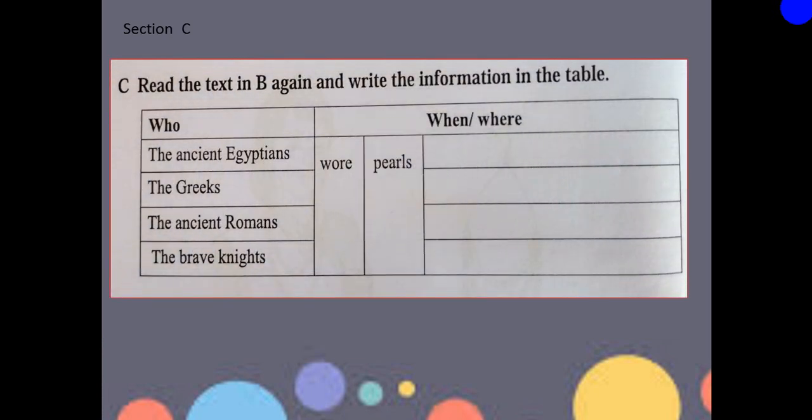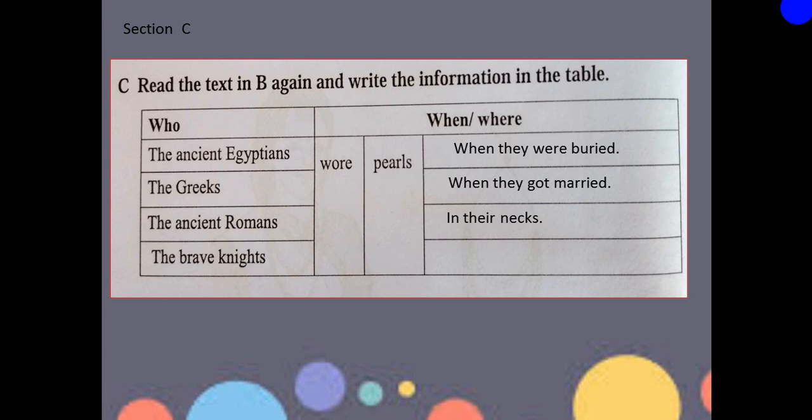So let us move to Section C. In Section C, there is a table. Read the text in B again and write the information in the table. After finishing your task, just match the answers with me. The ancient Egyptians wore pearls when they were buried. The Greeks wore pearls when they got married. The ancient Romans wore pearls around their necks. The brave knights wore pearls in battles.